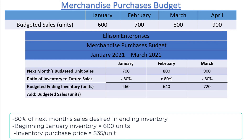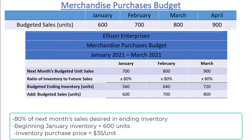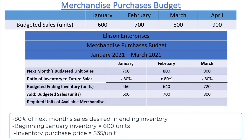Next, we must add the budgeted unit sales from the current month, so we copy the values from the sales budget: 600 for January, 700 for February, and 800 for March. Adding the first two values together gives us the required units of available merchandise — the total units the company would like to have available in any given month. 560 plus 600 equals 1,160; 640 plus 700 equals 1,340; and 720 plus 800 equals 1,520.